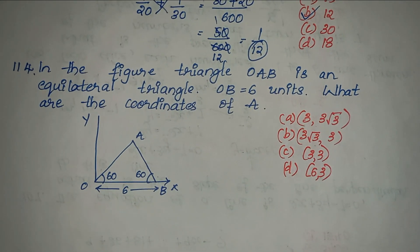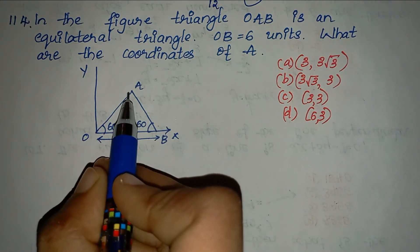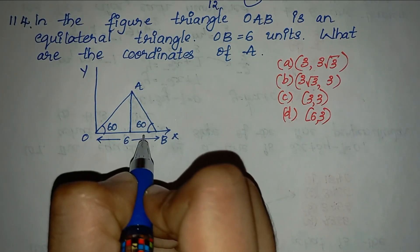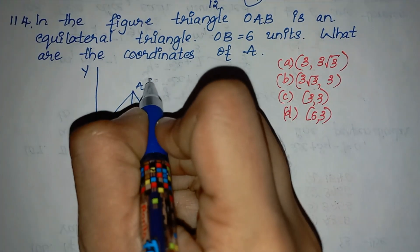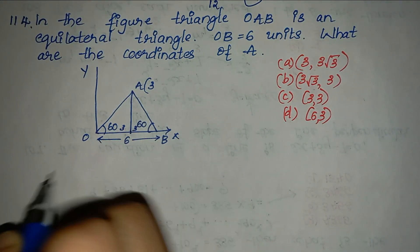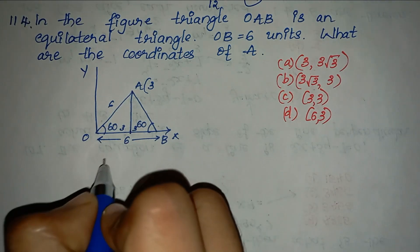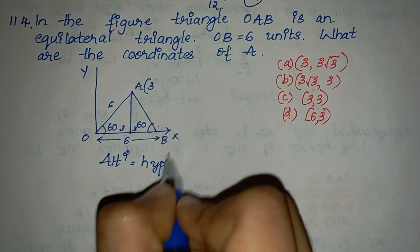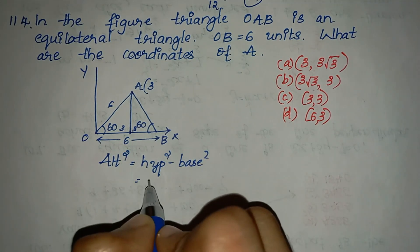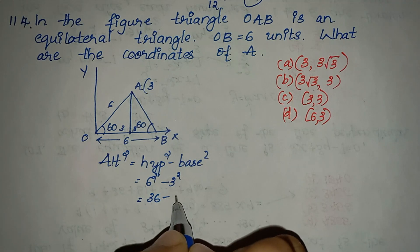Question 114: given an equilateral triangle OAB where OB equals 6, what are the coordinates of A? The base OB is 6, so half the base is 3. Using the altitude formula: altitude square equals hypotenuse square minus base square equals 6 square minus 3 square equals 36 minus 9 equals 27. So altitude equals 3 root 3. Option A is the right answer.